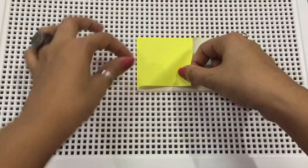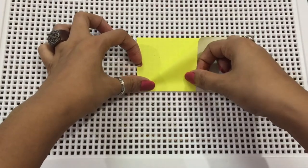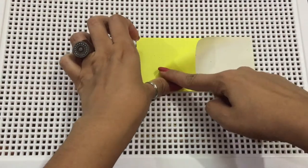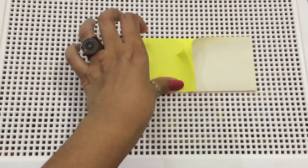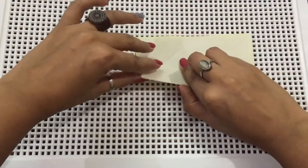And now take this corner and fold it like this and just pinch it from the middle just to make a crease in the middle.